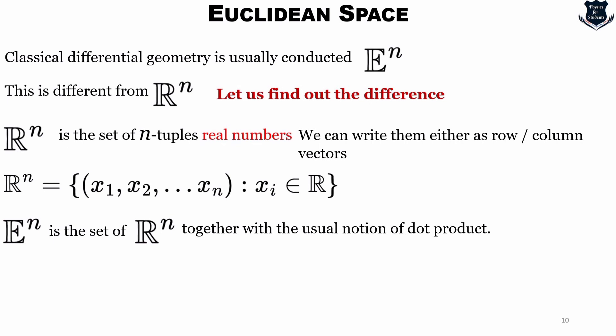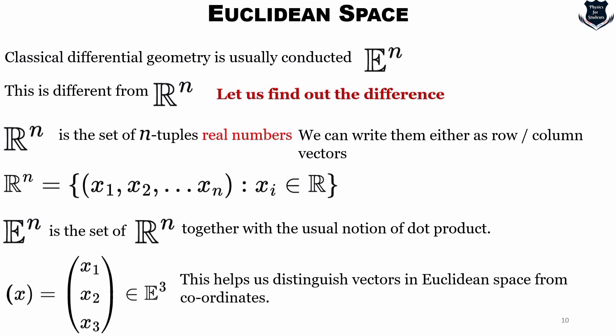So in this course, R^n is nothing more than the coordinate space. It is not assumed to have any additional vector space structure and certainly no dot product. So E^n is the set of R^n together with the usual notion of dot product. Remember that I just told you that it is not assumed to have any additional vector space structure and certainly no dot product, but E^n is a set of R^n together with the usual notion of a dot product. And we usually write this as column vectors which are denoted by bold phase. This helps us to distinguish vectors in Euclidean space from the coordinates.